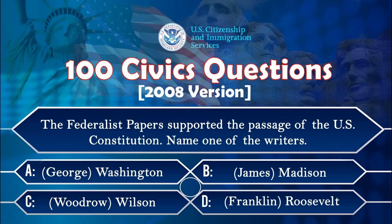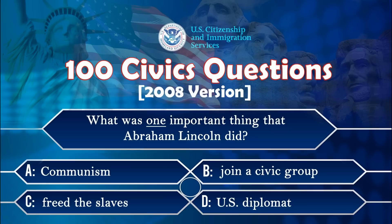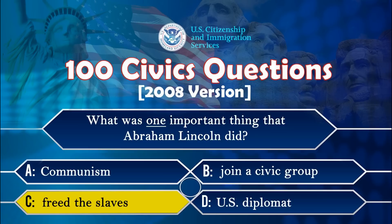The Federalist Papers supported the passage of the US Constitution. Name one of the writers. What was one important thing that Abraham Lincoln did? Freed the slaves.